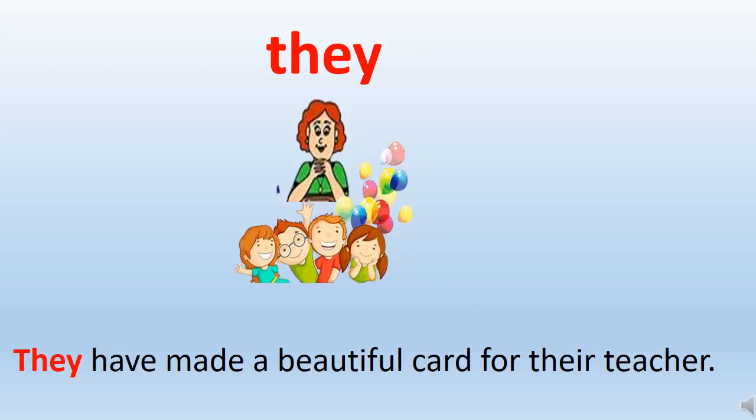Let's move on to the next slide. The word is they. Now children, when there are more than one person we use they. It can be used for a girl also and a boy also — like we can use it for she and he as well. But when there are more than one person then we use they. For example: they have made a beautiful card for their teacher.